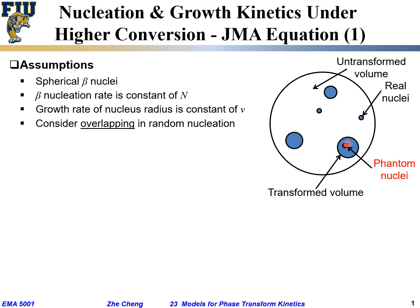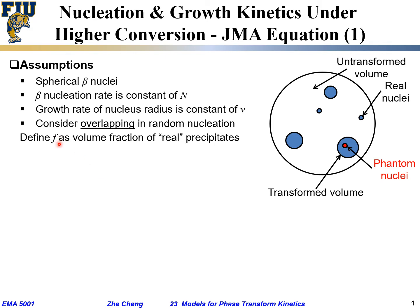Since the region has already changed from the matrix phase to the precipitated phase, a new nucleus naturally cannot form there. In our previous treatment for low conversion, we neglected this. But now, when dealing with higher conversion, if we allow random nucleation, mathematically a nucleus may be assigned there — but in reality it cannot occur. We call these phantom nuclei.